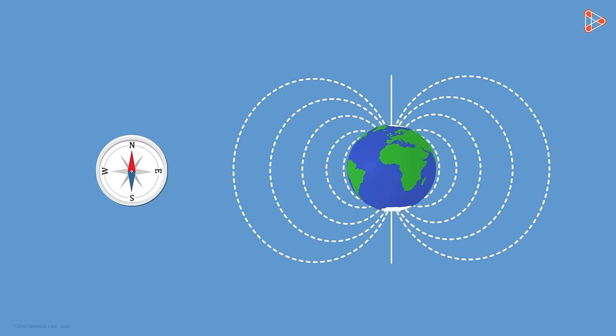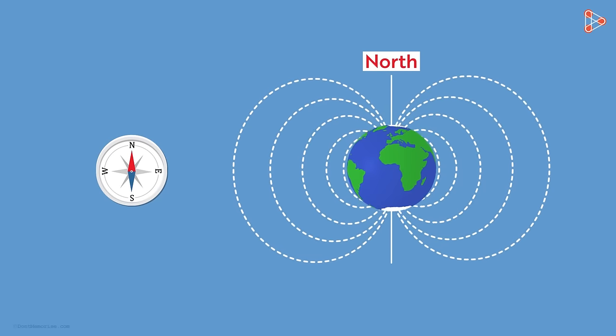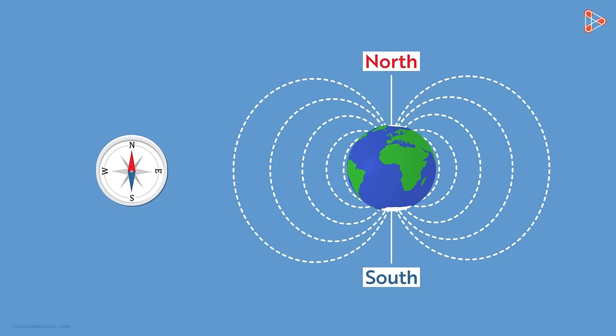Now we know for a fact that if we keep this compass at rest away from any other magnet, then it will align itself in the direction of the earth's magnetic field. That is, the red part will point in the north direction, while the other part will point in the south direction.